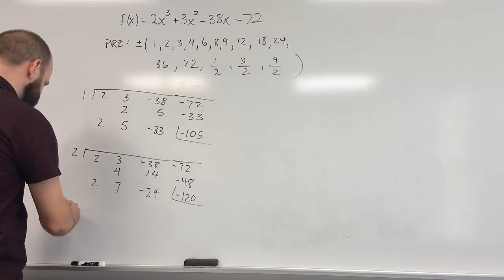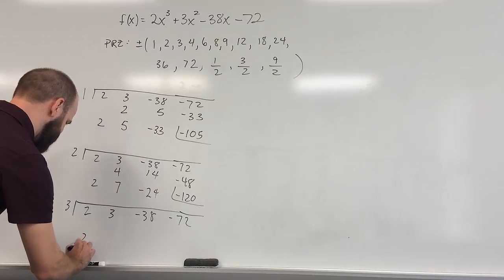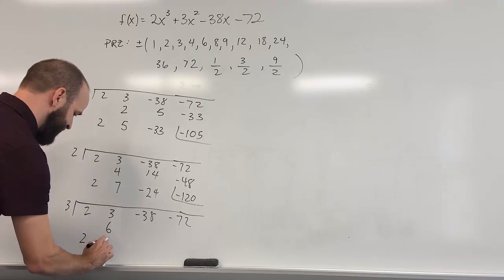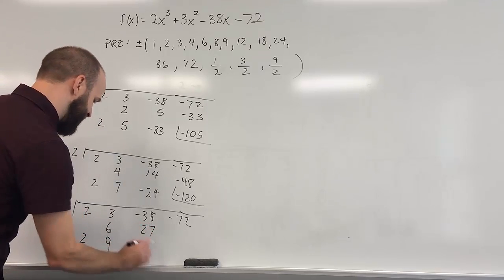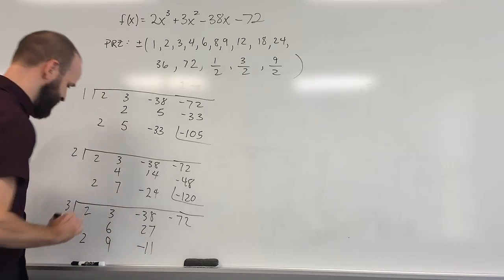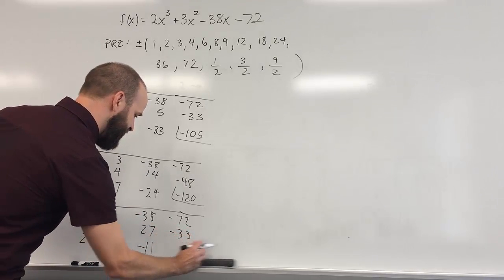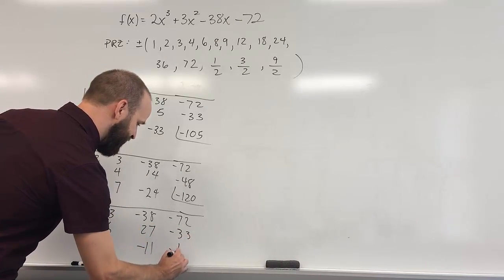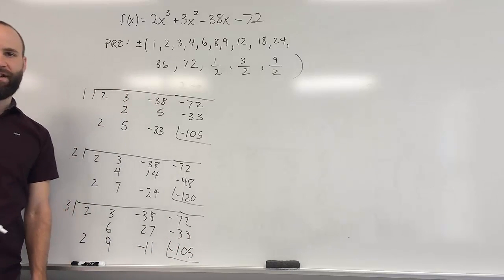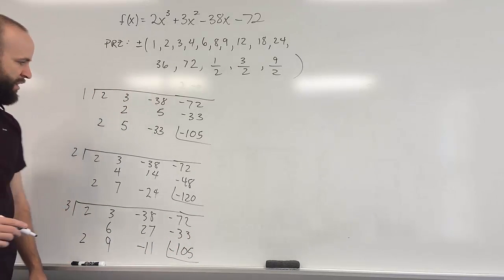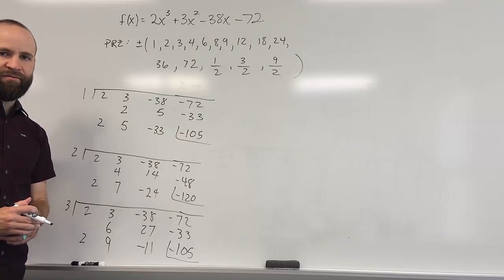Next, let's try 3. Synthetic division gives: 2; 3×2=6; 3+6=9; 9×3=27; −38+27=−11; −11×3=−33; −72+(−33)=−105. So f of 3 is also not a zero. And so far I've got all negative values, so we keep going.